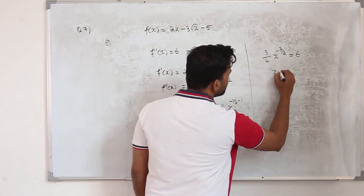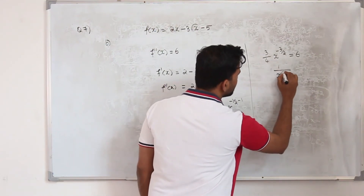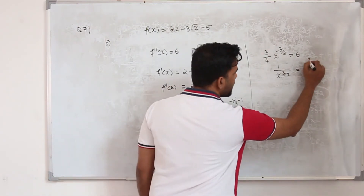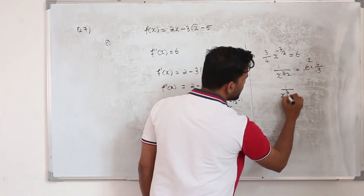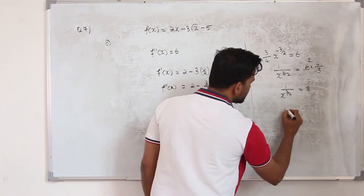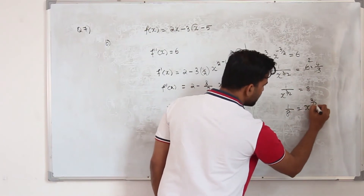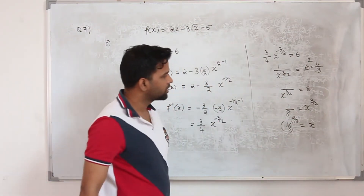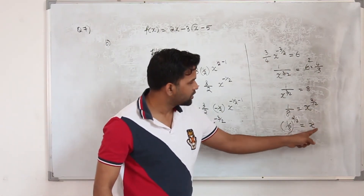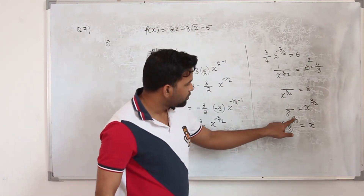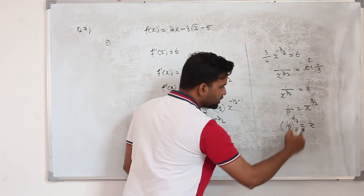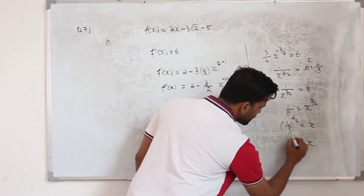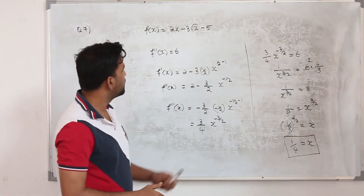Rearranging: x^(-3/2) equals 1/x^(3/2) equals 6 times (4/3) equals 8. So 1/x^(3/2) equals 8, which means x^(3/2) equals 1/8. Raising both sides to the power 2/3: x equals (1/8)^(2/3). Since 8 equals 2³, we get 8^(2/3) equals (2³)^(2/3) equals 2² equals 4. Therefore x equals 1/4.